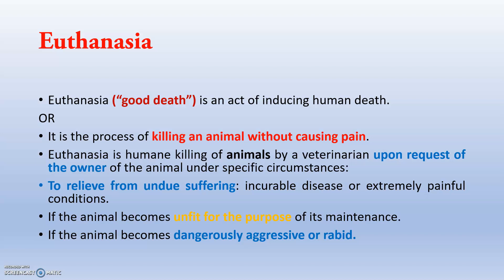Euthanasia is performed upon request of the owner of the animal under specific circumstances: if the animal is suffering from extremely undue suffering such as incurable diseases, or extremely painful conditions that cannot be altered, or if the animal becomes unfit for the purpose of its maintenance, or if the animal becomes dangerously aggressive or rabid.